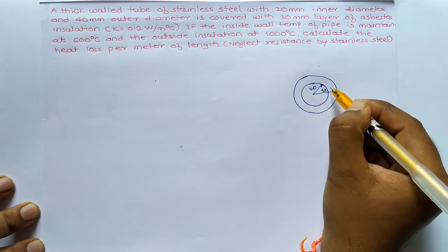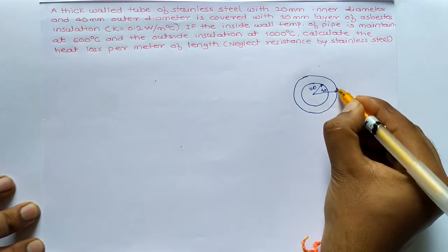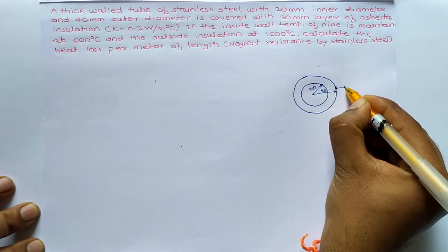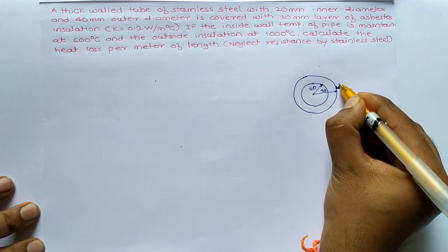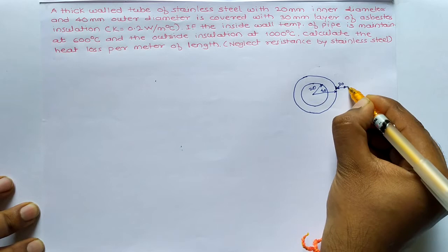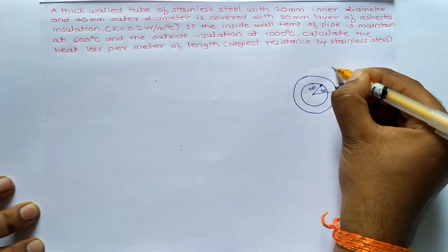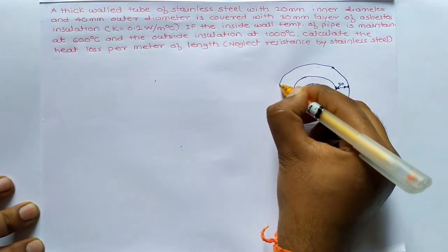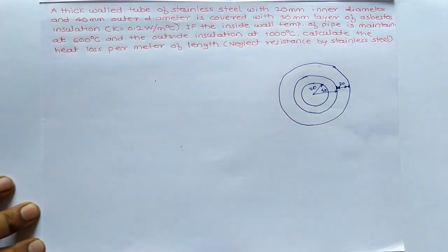They have not given the radius, diameter, all these things. Above this surface, 30mm. From this point only they have given 30mm distance. So this will be the next one.